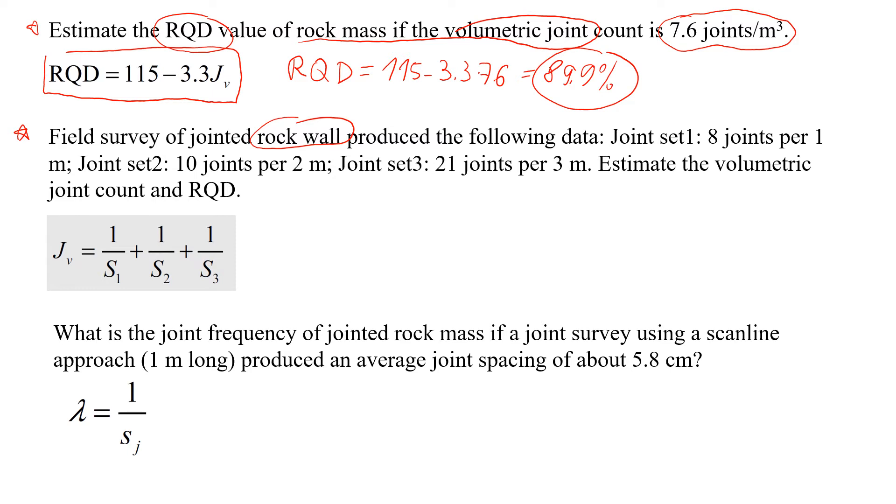So for set number one we measured eight joints per meter. For the second set there were 10 joints within two meters. And for joint number three there were 21 joints per three meters.